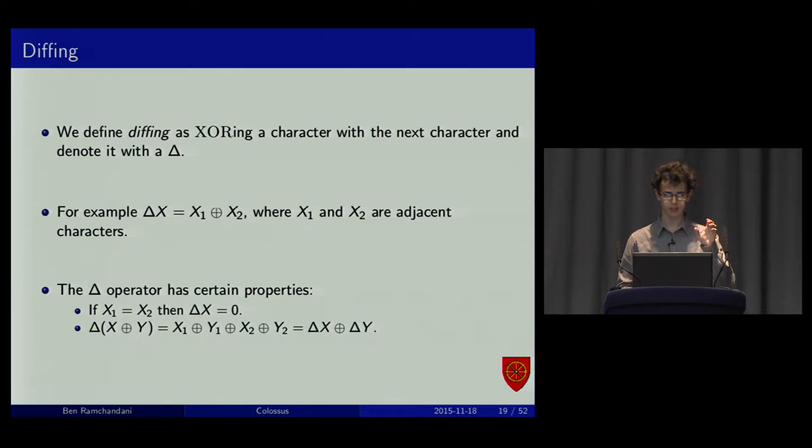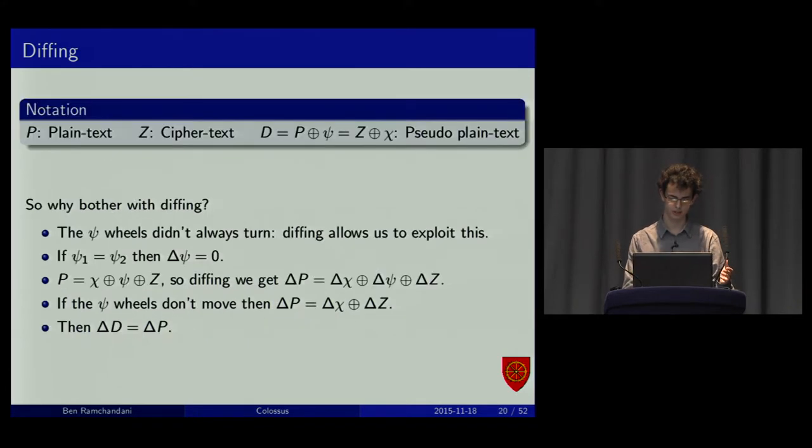A bit of maths, I'm afraid. To find diffing, you take one character and the next character, and you XOR them together. If those two characters were the same, you XOR them, you'll get zero. And it distributes over XOR quite nicely. I'm going to use this. This is useful because the psi wheels didn't always change. If the psi component was the same twice in a row, the XOR would disappear. And then, the psi component disappears from the diffed equation. Actually, the diffed pseudo plaintext becomes the same as the diffed plaintext. We just have the chi component in it.